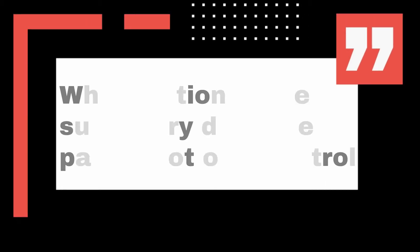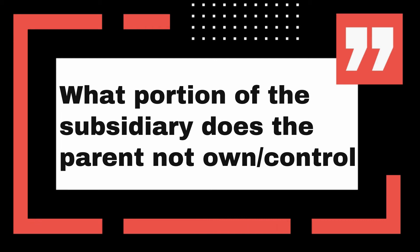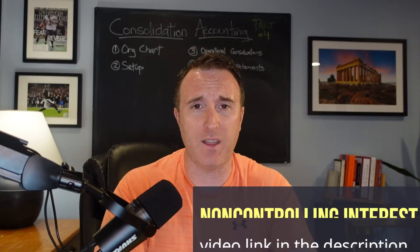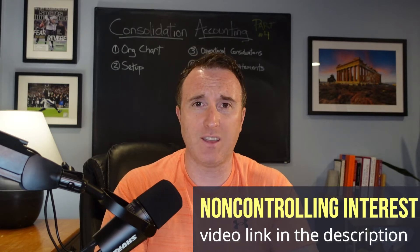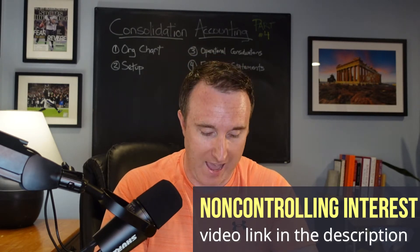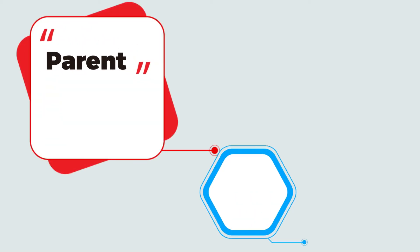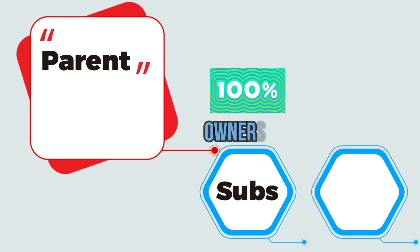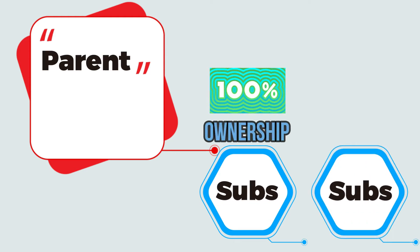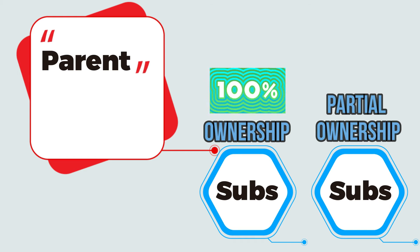Then you need to consider: do I only own a portion or control a portion of a subsidiary? Because if that's the case, you're going to have this concept of non-controlling interest to consider as well. Non-controlling interests have a whole other video — that was part three. So if you don't know what non-controlling interest is, once you get done with this video, go check that one out. Once you've made your assessment, you're going to define this is the parent, here are my subsidiaries, and here are situations where I'm going to have non-controlling interest. Your next step is building out the structure that allows you to roll up all those entities into one economic entity.